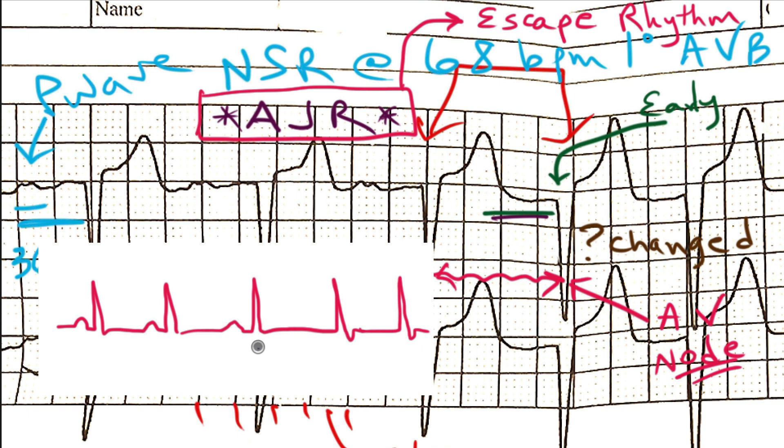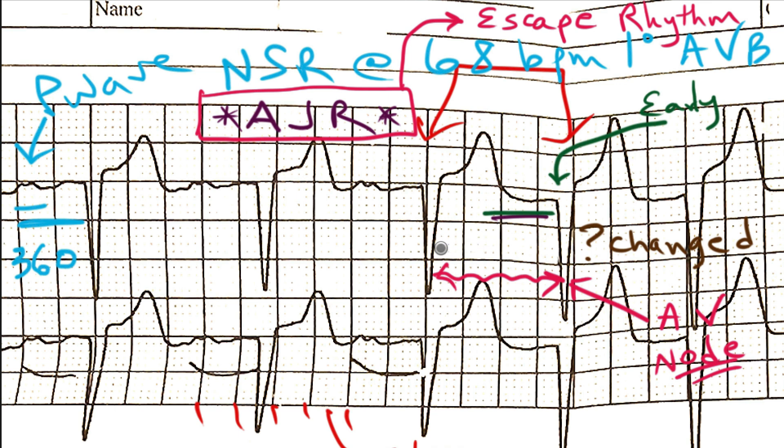If that's the case, then the first beat of this accelerated junctional rhythm would wind up being late because there's no P wave here. And with no P wave, then the AV node kind of takes over. But what differs here is that this QRS complex doesn't come late as an escape rhythm. It comes a little early.